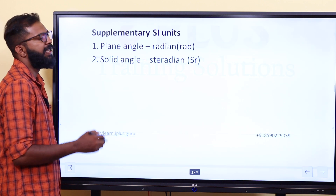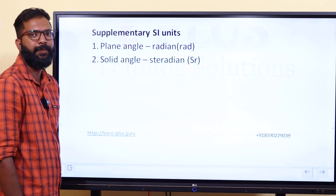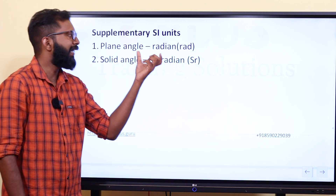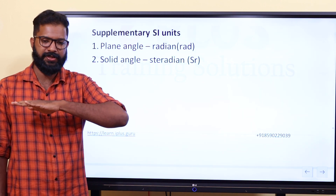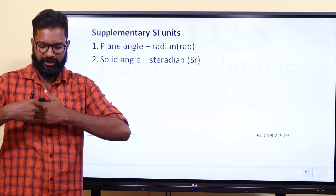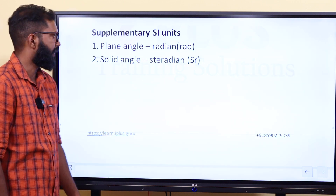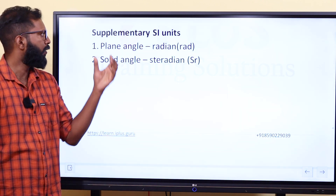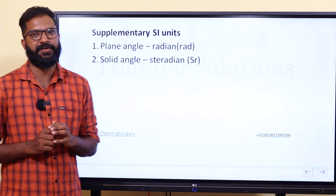Now, the supplementary SI units. There are two supplementary units: one is plane angle and the other is solid angle. The plane angle is measured in radian — for example, a point rotating on a surface. The solid angle is measured in steradian, with symbol SR.